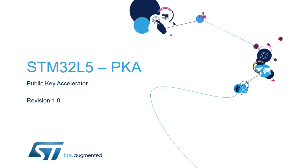Hello, and welcome to this presentation of the STM32 Public Key Accelerator, which is embedded in STM32WB microcontrollers. It covers the features used to perform asymmetric key cryptography, which is widely required for cryptographic applications.